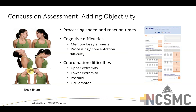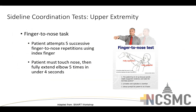We look at upper extremity coordination, lower extremity coordination, postural coordination, and ocular motor coordination. For upper extremity, a simple finger-to-nose test is easily used on the sideline — ask the athlete to repeatedly bring their finger to touch their nose and your finger as you move it across their visual space. You're looking for accuracy, exaggerated movements, and any tremor.